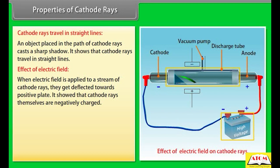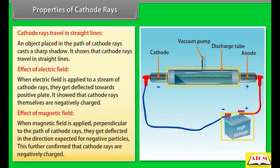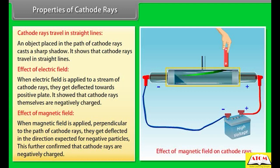Effect of electric field: When an electric field is applied to a stream of cathode rays, they are deflected towards the positive plate, showing that cathode rays are negatively charged. Effect of magnetic field: When a magnetic field is applied perpendicular to the path of cathode rays, they get deflected in the direction expected for negative particles, further confirming that cathode rays are negatively charged.